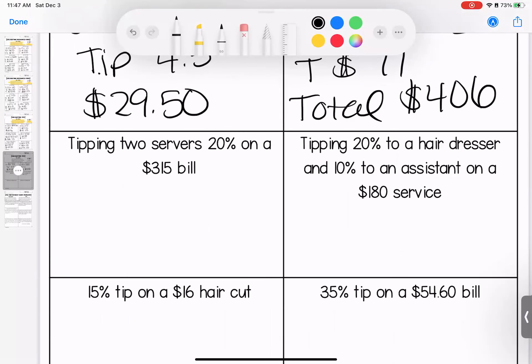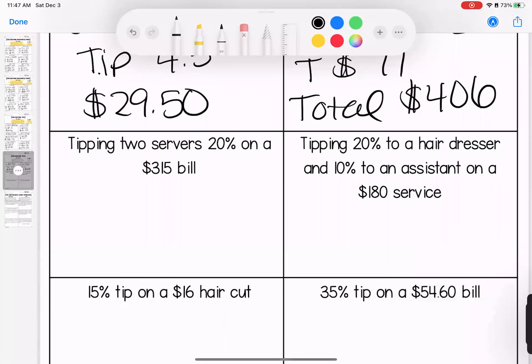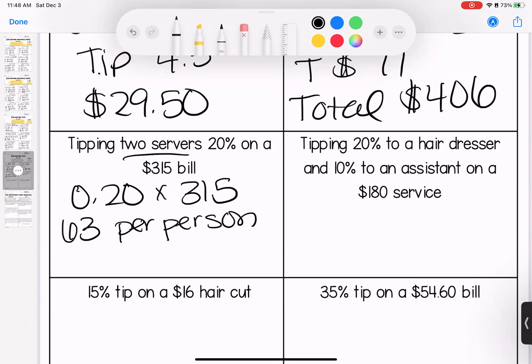We're tipping two servers 20% on a $315 bill. Be careful with this one. We're still doing 20% of our $315 bill, but our total is going to be different. When we multiply that, our tip is $63 per person. I told you we're tipping two people. So when I add that to my total, I'm adding $126. My total is $441. So watch the wording. These are getting a little tricky.